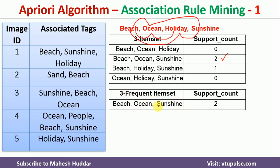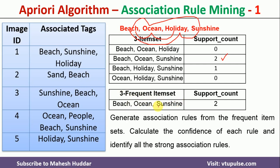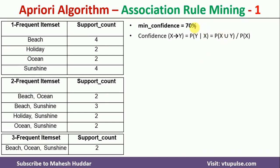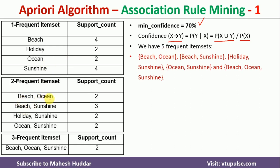Now the next part is to find the strong association rules. If we want to find strong association rules, we use the confidence formula. The minimum confidence required is 70%. For a rule X → Y to be strong, the confidence is the frequency of both X and Y appearing together divided by the number of times only X appears. If it is 70% or more, it is a strong rule. The frequent itemsets are: beach-ocean, beach-sunshine, holiday-sunshine, ocean-sunshine, and beach-ocean-sunshine.